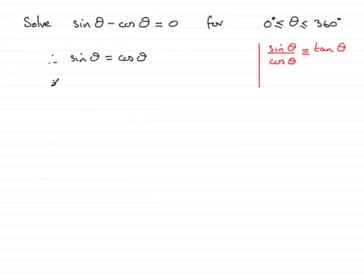And then if we divide both sides by cos theta, we're going to have sin theta over cos theta equals cos theta over cos theta. And from this identity here, we've got tan theta for the left-hand side.